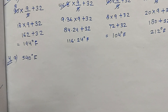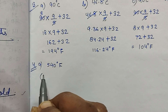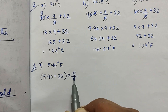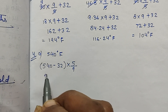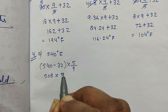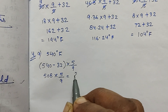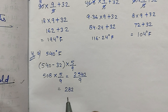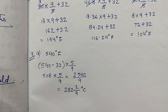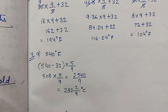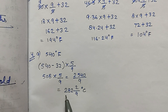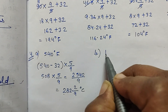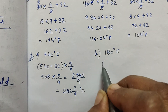Part A: 540 degree Fahrenheit. So 540 minus 32 into 5/9. 540 में से 32 minus करेंगे तो आएगा 508. 508 into 5/9 is equal to 2540/9. 9 से divide करेंगे तो पूरी तरह divide नहीं होगा — 282 and remainder 2. So the answer is 282 and 2/9 degree Celsius.